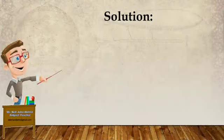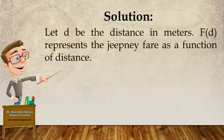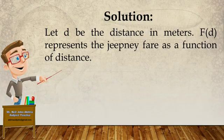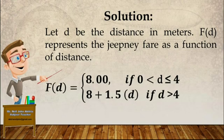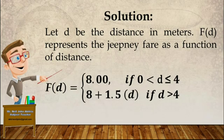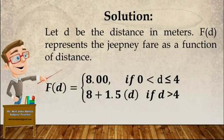Here is what you are going to do. Let d be the distance in kilometers and f of d represent the jeepney fare as a function of distance. To express it as a piecewise function: f of d is equal to 8 pesos if the distance is less than or equal to 4. And if the distance is greater than 4, you will be charged 8 pesos plus 1.5 pesos multiplied by the excess distance. Did you get it, class?